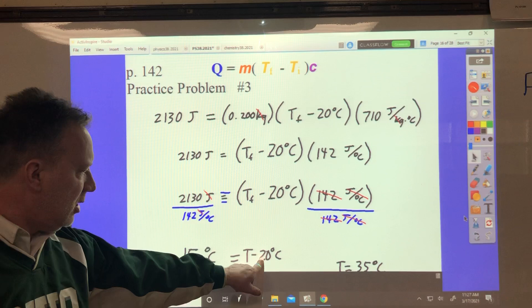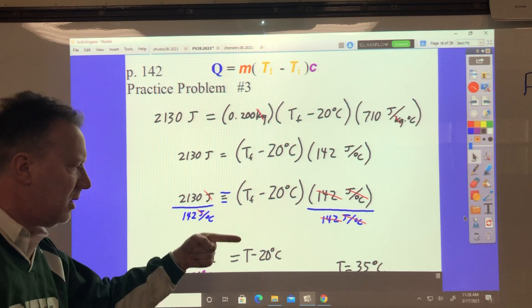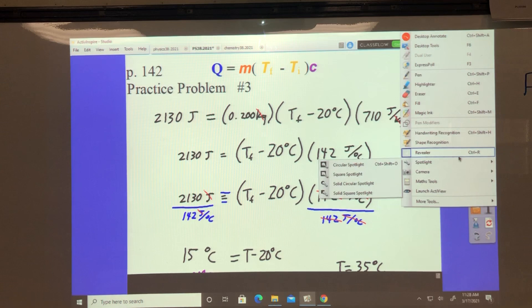So some practice on stuff we've looked at many times. This is pretty easy. Just add 20 to both sides. Add 20 degrees Celsius there, it goes away. Add 20 degrees Celsius there, and you get 35.